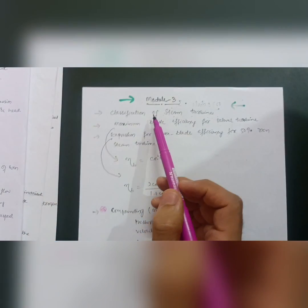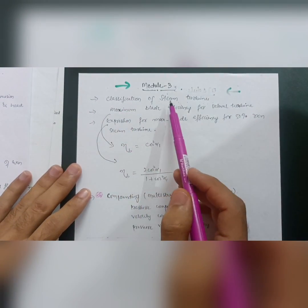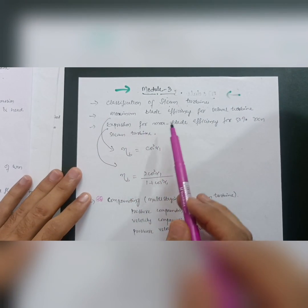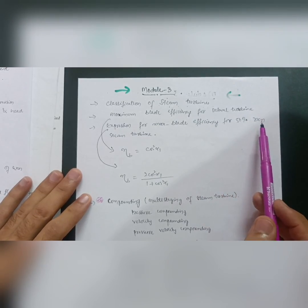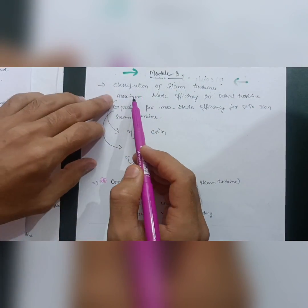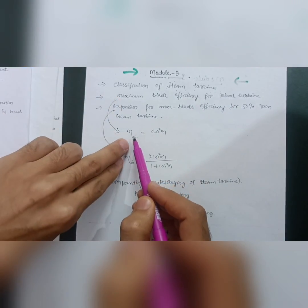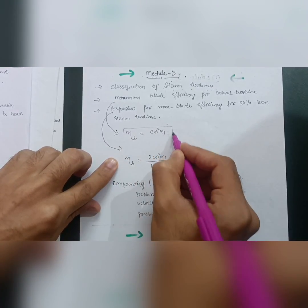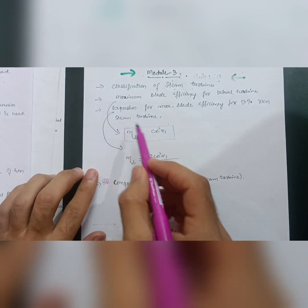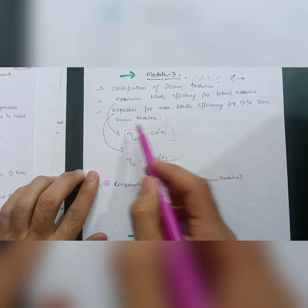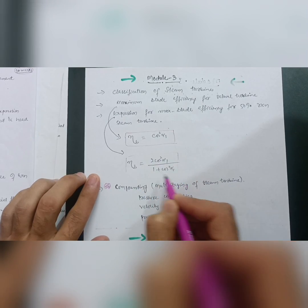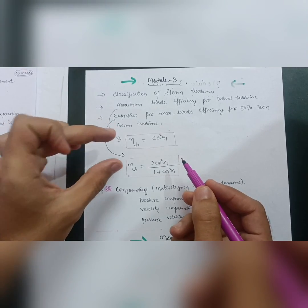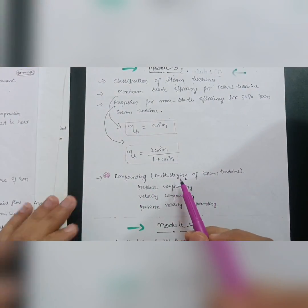In Module 3, cover four topics. First is classification of steam turbines. Second, derive the expression for maximum blade efficiency for the impulse turbine: blade efficiency = cos²α1. Third, derive the expression for maximum blade efficiency for the 50% reaction steam turbine: blade efficiency = 2cos²α1 / (1 + cos²α1). You must derive these two equations.